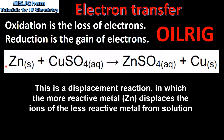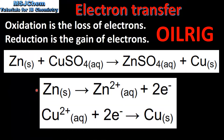In this reaction zinc reacts with aqueous copper sulfate to form aqueous zinc sulfate and copper. Here we have the two half equations in the reaction. In the first half equation we can see that zinc metal forms aqueous zinc 2+ ions by losing two electrons, so the zinc metal is being oxidized.